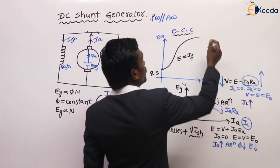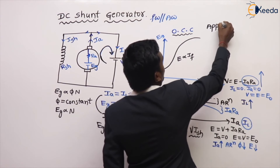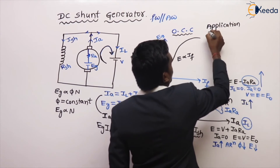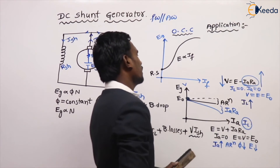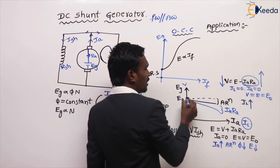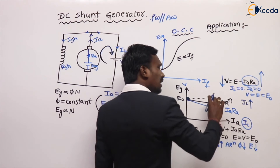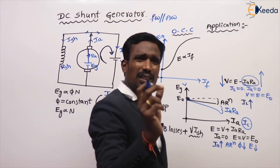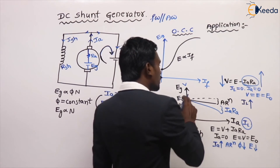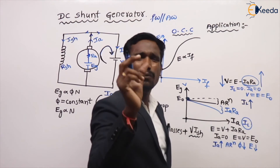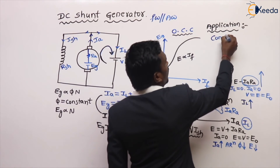What are the applications of the DC shunt generator? In the load characteristics, the load voltage reduces when load increases, but this decrement is very small — not even 10%, just around 5% only. That's why these generators are used for constant voltage applications.